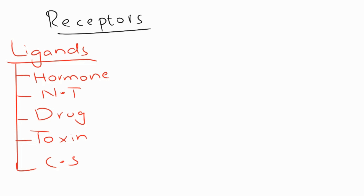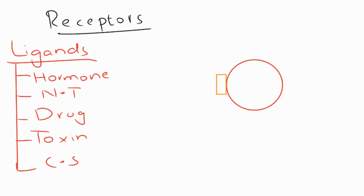For example, consider a receptor. This receptor has a very special site on it. On this site, the ligand will act, and this receptor in response produces a biochemical change.